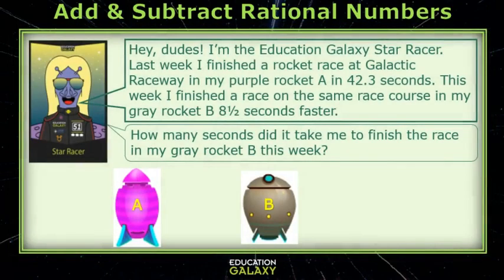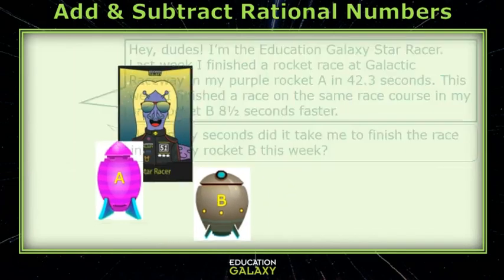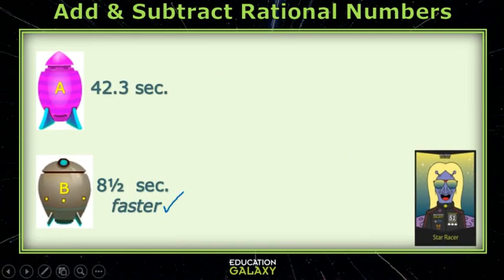Hey dudes, I'm the Education Galaxy Star Racer. Last week, I finished a rocket race at Galactic Raceway in my Purple Rocket A in 42.3 seconds. This week, I finished the same race on the same course in my Gray Rocket B, 8.5 seconds faster. Let's figure out how long it took me to finish the race this week. Since I went faster, I need to subtract the 8.5 seconds. So it's going to be 42.3 minus 8.5.